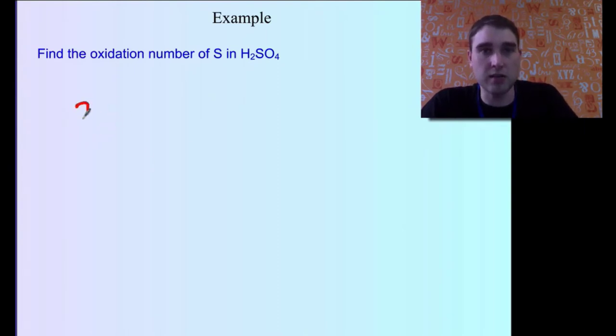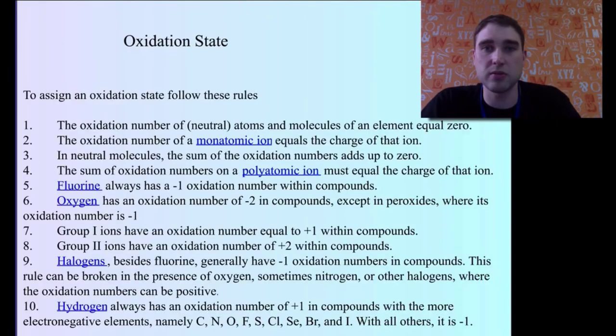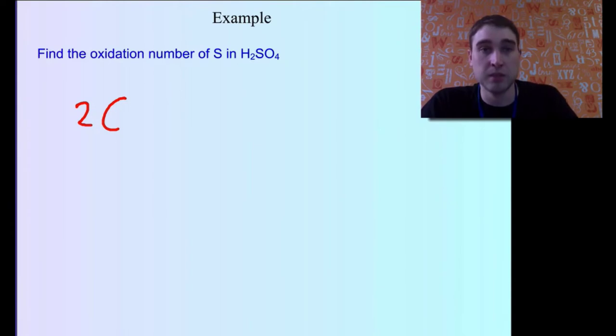So what we're going to say is 2 times the oxidation number of hydrogen. Now if we go back to our rules, we can see hydrogen is always plus 1. Unless it's with those. It's not really with those. So in this case it's going to be plus 1.